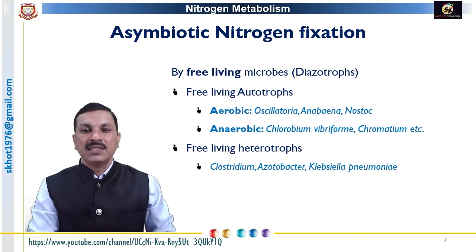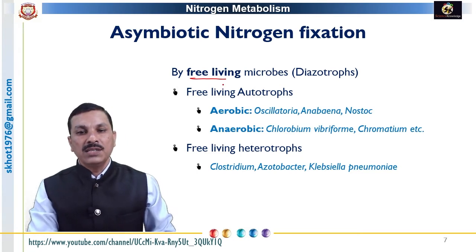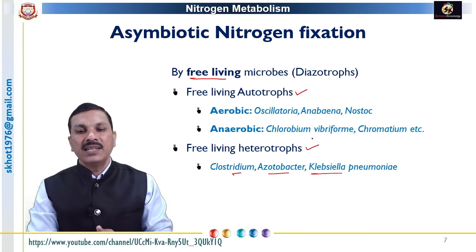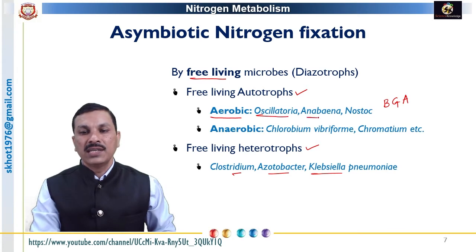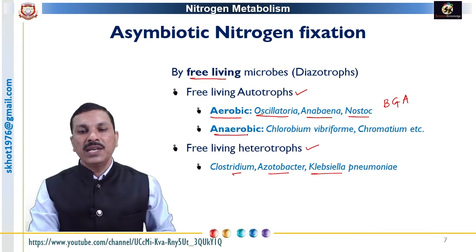Today we will discuss asymbiotic nitrogen fixation, which is carried out by free-living microbes. These microbes may be autotrophs — they synthesize their own food — or they may be heterotrophs, like Clostridium, Azotobacter, or Klebsiella. The autotrophic bacteria include aerobic organisms like blue-green algae, also called cyanobacteria — best examples being Oscillatoria, Anabaena, and Nostoc. Certain autotrophic diazotrophs are anaerobic, for example Chlorobium and Chromatium.